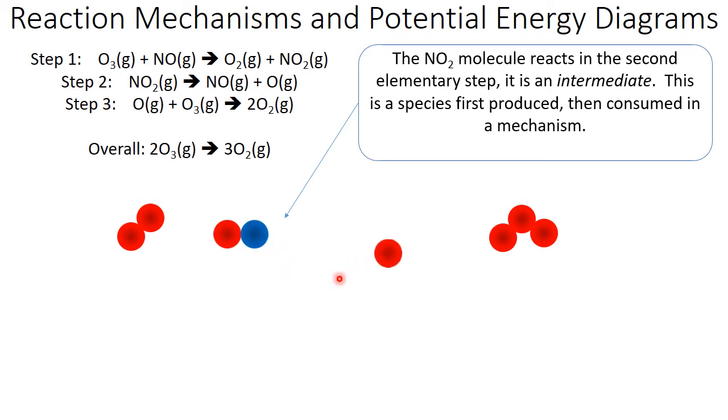The NO2 is going to lose an oxygen atom, forming NO and monatomic oxygen. That monatomic oxygen is also an intermediate in this mechanism.